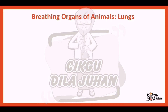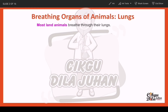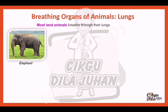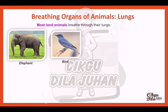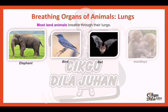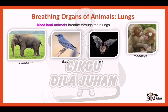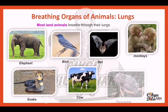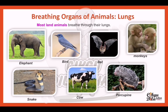The first breathing organ is lungs — the most common one. Most land animals breathe through their lungs, for example elephant, bird, bat, monkey, snake, cow, and porcupine. You can name any other animals that breathe through their lungs.